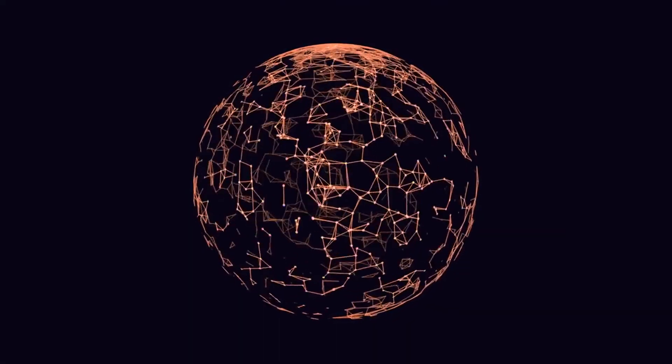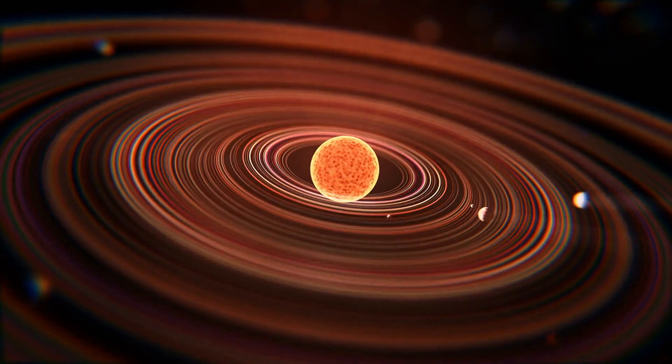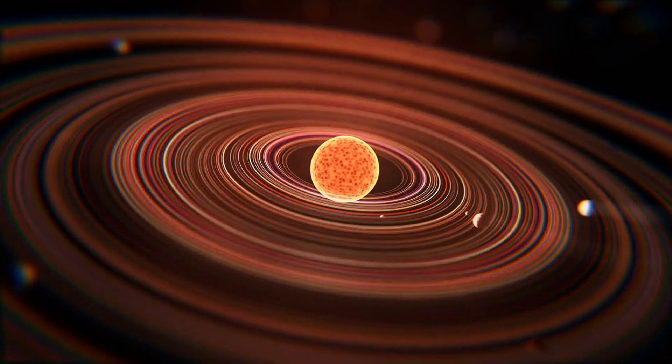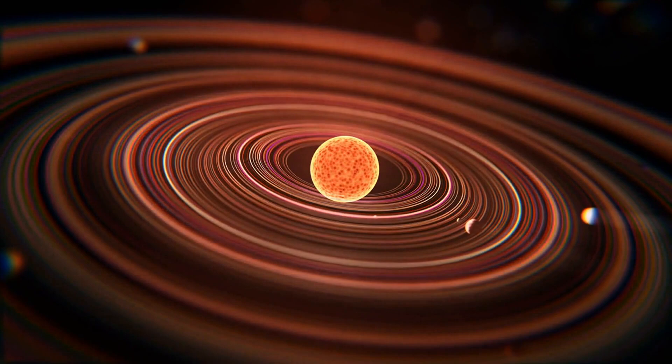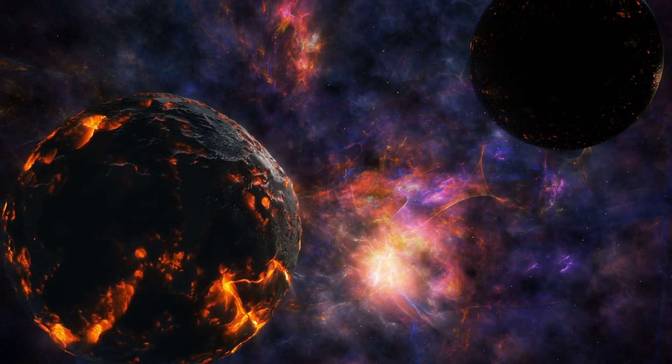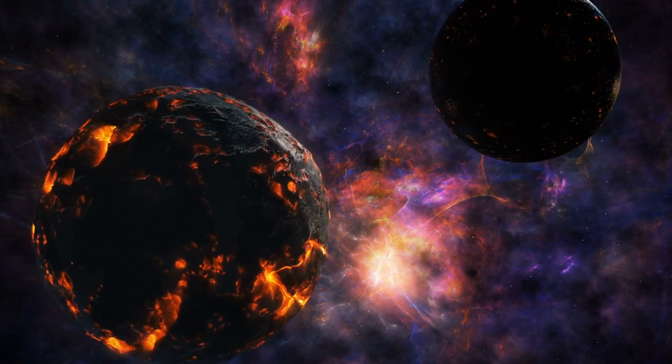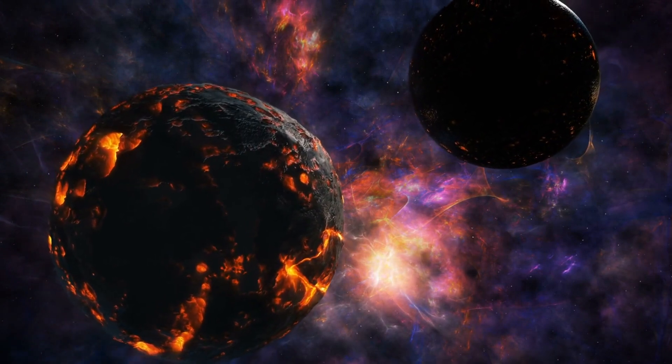What could possibly upset the delicate dance of the planets? Let's begin with an unsettling truth: our solar system isn't as stable as we once thought. The forces at play—gravitational interactions, tidal forces, and the sheer unpredictability of celestial mechanics—are constantly reshaping the cosmic order. Even the smallest changes can lead to the most catastrophic events.